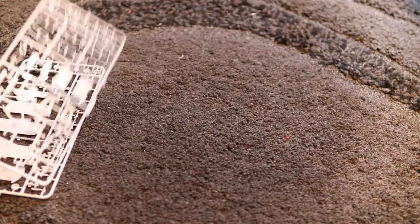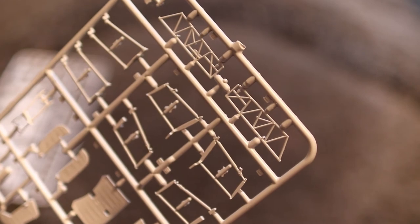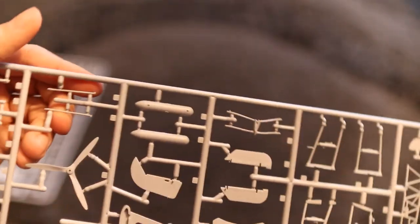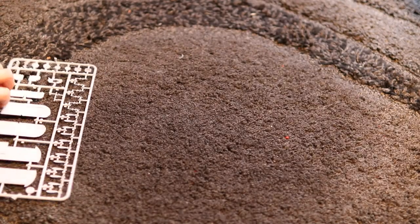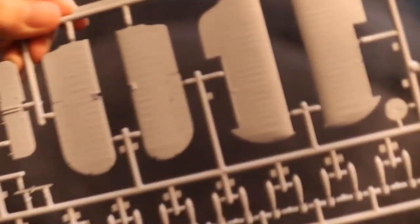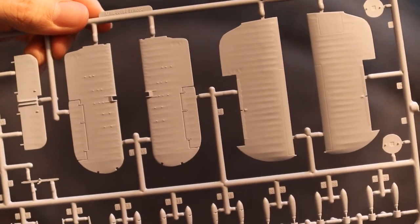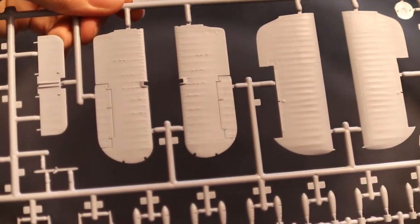Then we have some more of the crew compartment cage area there. Oh, very good. And then the final sprue, we have the other wings, again just as crisp as the last lot, and we have our bomb racks and bombs.